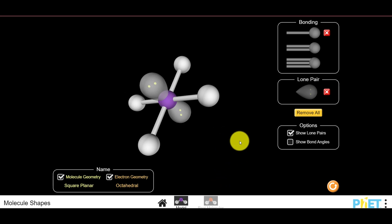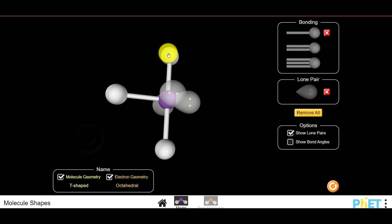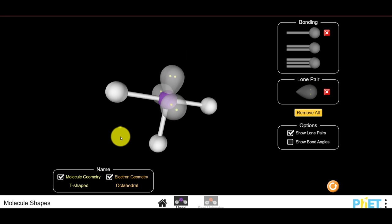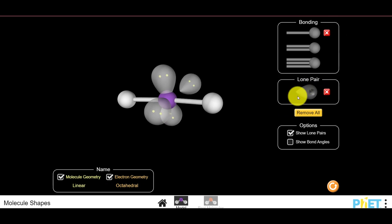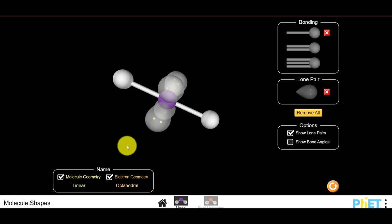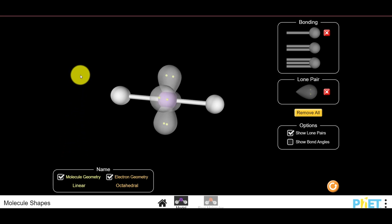You can get other shapes as well. You can remove another bond and replace it with a lone pair, and now you get that T-shape again that we saw with our trigonal bipyramid. And if you replaced another bond with a lone pair, you can get a linear shape again with your octahedral. So those are shapes that we saw in our trigonal bipyramid.